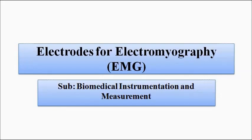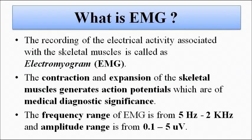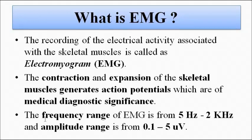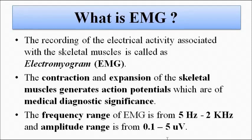The basic definition of EMG is that it is the recording of the electrical activity associated with the skeletal muscles — the contraction and expansion of the skeletal muscle while doing any physical activity. It generates action potentials which are of clinical and diagnostic significance in the medical field. The amplitude range of EMG signals lies from 0.1 to 5 millivolts and the frequency range is from 5 Hz to 2 kHz.